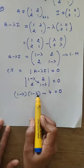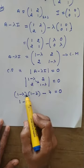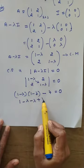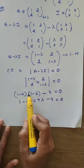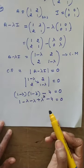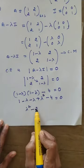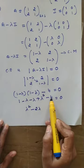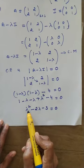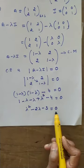Expanding (1-lambda)(1-lambda): 1 times 1 is 1, minus lambda, minus lambda, plus lambda squared, minus 4 equals zero. Simplifying: lambda squared minus 2 lambda, and 1 minus 4 equals minus 3, giving lambda squared minus 2 lambda minus 3 equals zero. This is the characteristic equation — a quadratic equation.